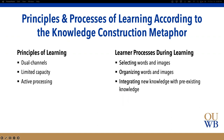In formal learning settings, information is primarily conveyed in one of two ways — visually or auditorially. The second principle is limited capacity: people can only actively process a limited amount of information through each channel at any given time. But by taking advantage of both channels and being intentional about presenting information both visually and auditorily, we can expand some of that limited capacity.